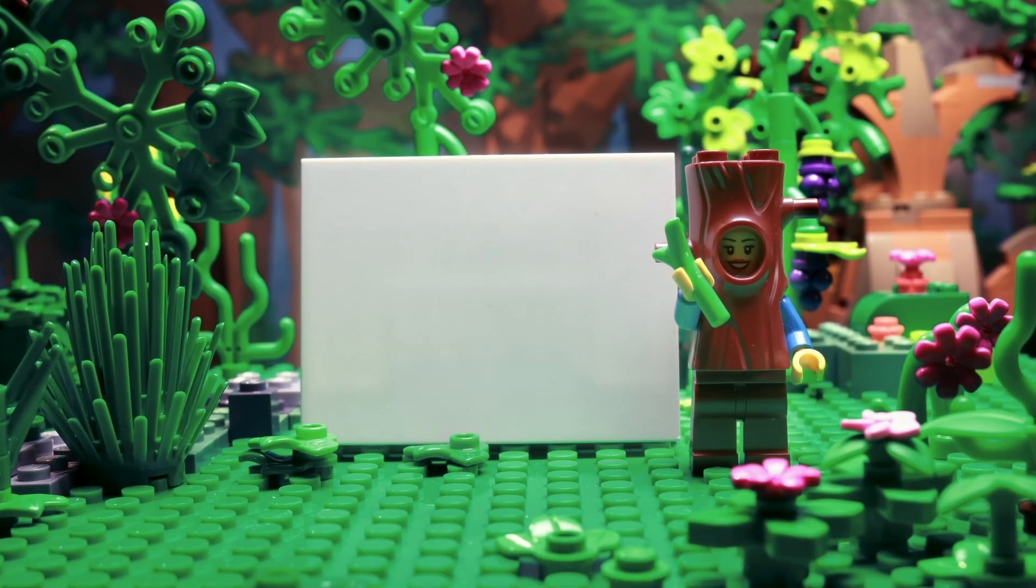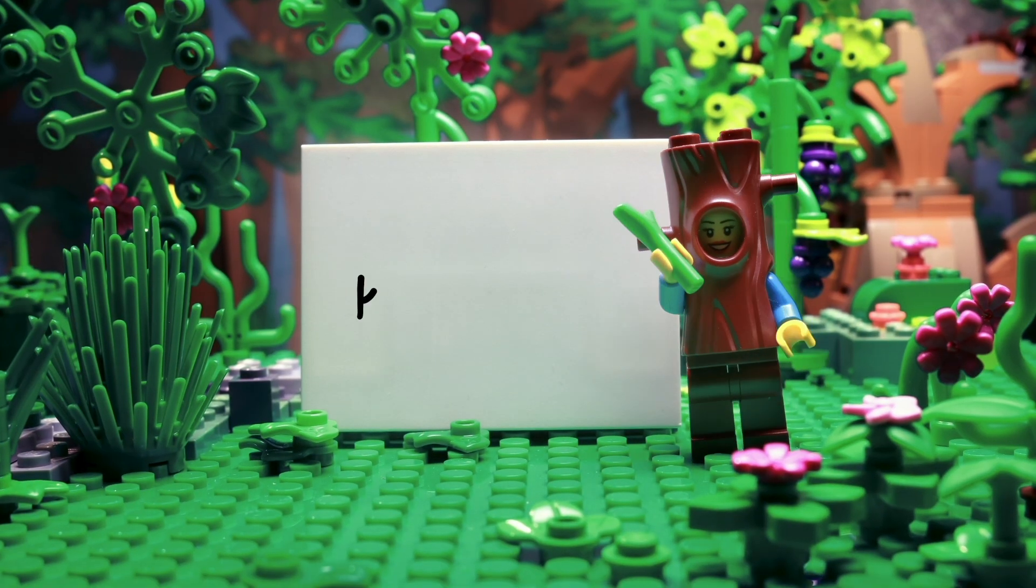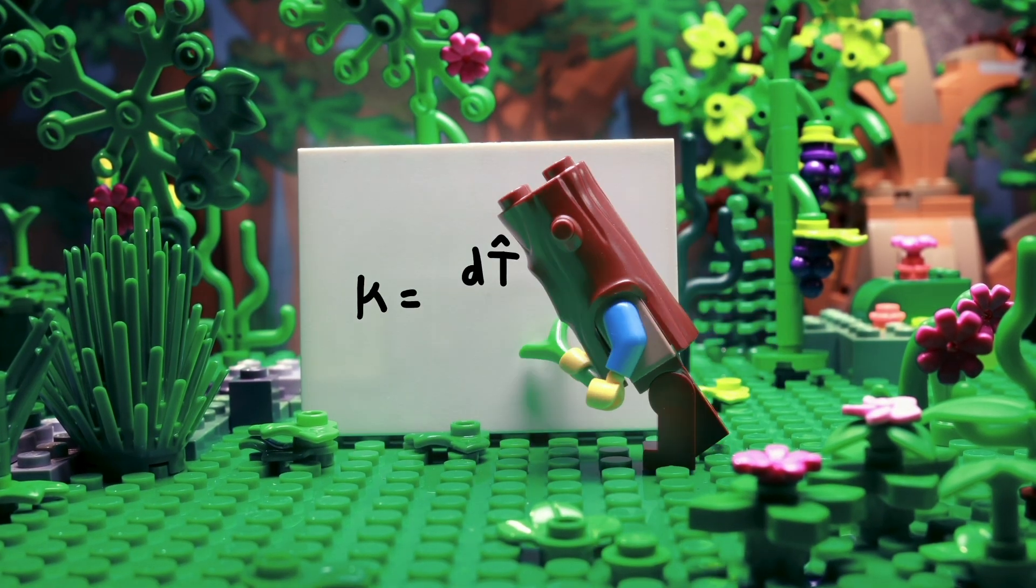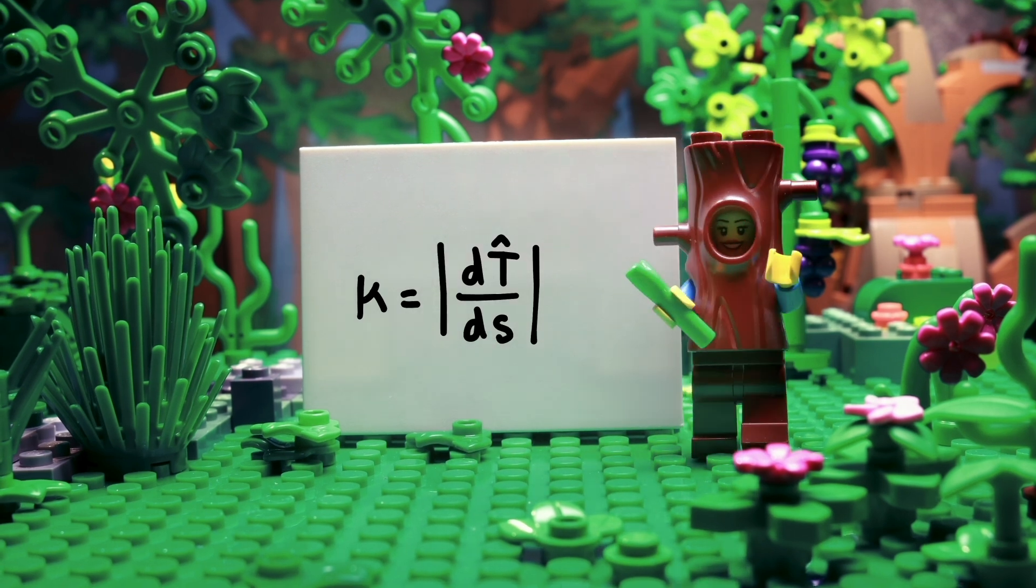In more formal mathematics, the curvature is the rate of change of the unit tangent vector T with respect to arc length S going along a curve.